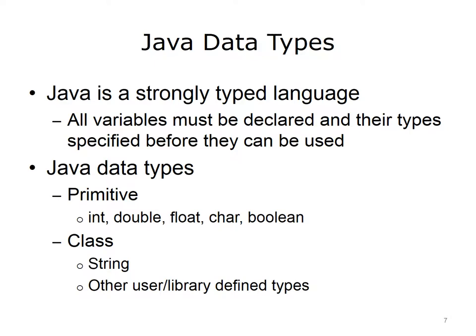Java is a strongly typed language. This means that all variables must be declared with a given data type before they can be used. Many other languages use implicit typing, where declarations are not used. Instead, the data type is inferred from the values that are assigned to the variables. Java has two categories of data types: primitive and class types. Primitive types are used for single, simple variables. The slide lists some of the primitive types: int for integer, double and float for floating point numbers, char for character, and boolean. Class types refer to data types used to create objects. Class types can be defined by users or within Java libraries. A commonly used class type is string, which is a series of characters.